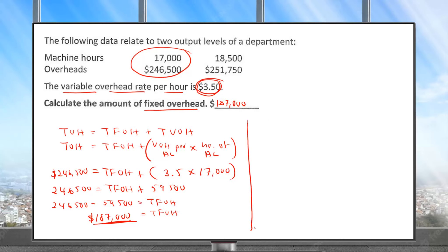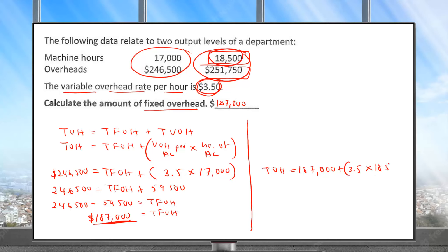To confirm the answer, let's use the second activity level. I know the fixed cost and the variable cost, and we'll check whether the total cost comes to 251,750 when machine hours are 18,500. So: total overhead equals 187,000 plus 3.5 multiplied by 18,500 hours.